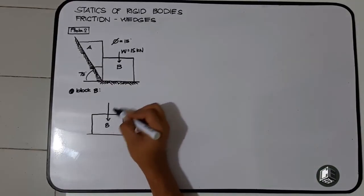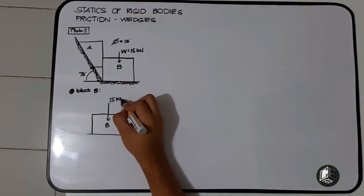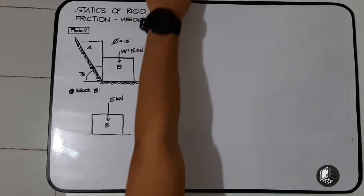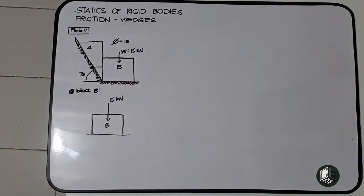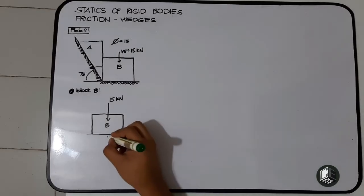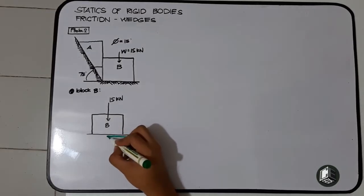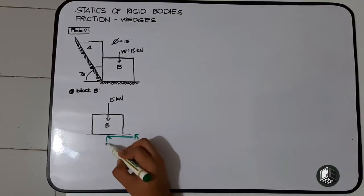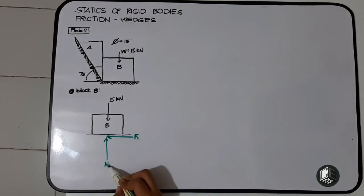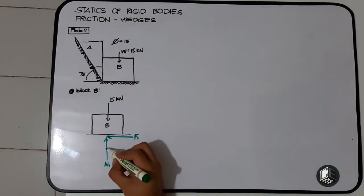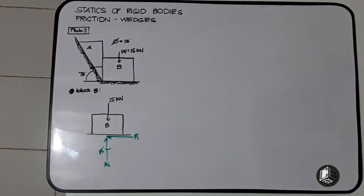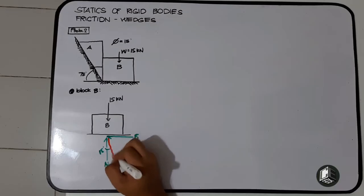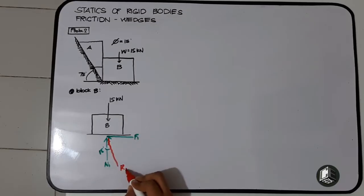Ito yung ating weight na 15 kilo Newton. At since ang movement natin is to the right, ibig sabihin kailangan natin i-resist yun. So ito yung ating frictional force 1. At ito yung ating normal force 1. So ibig sabihin yung angle of friction natin is andito — 15 degrees. Yung ating reaction 1.